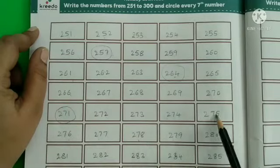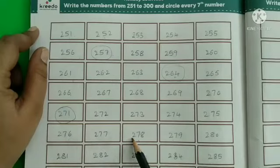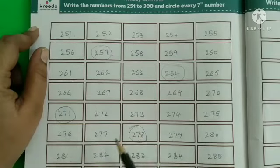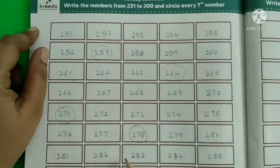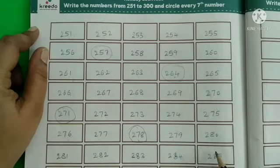First, 2nd, 3rd, 4th, 5th, 6th, 7th. Circle 278. First, 2nd, 3rd, 4th, 5th, 6th, 7th. Circle 285.